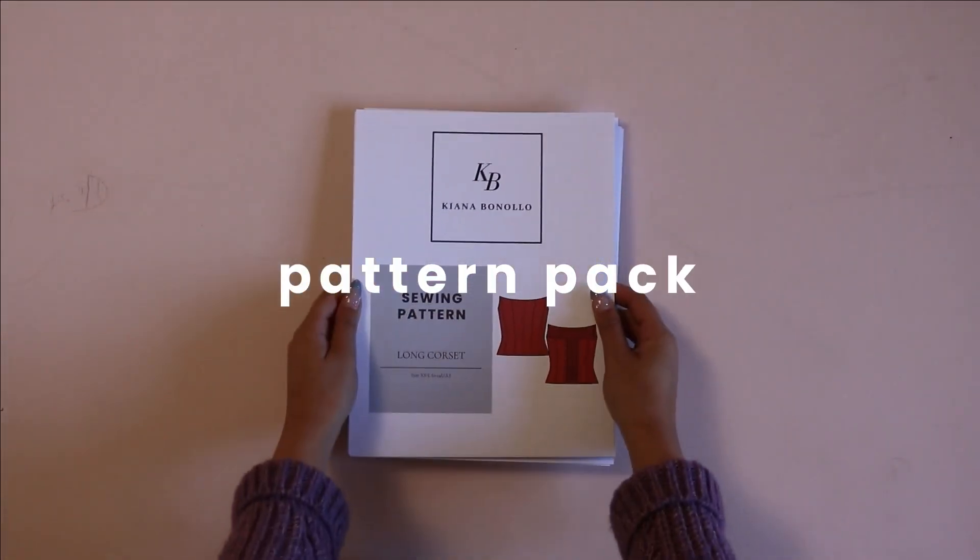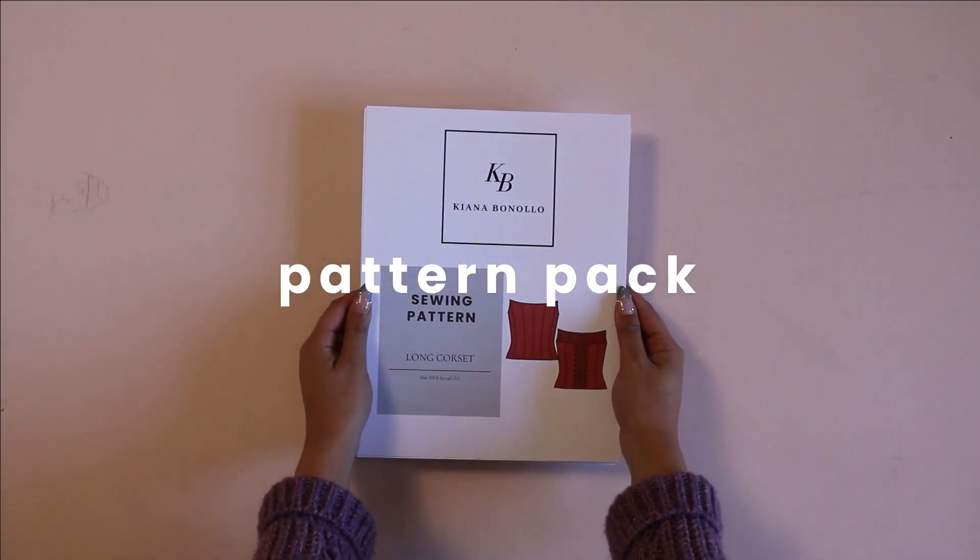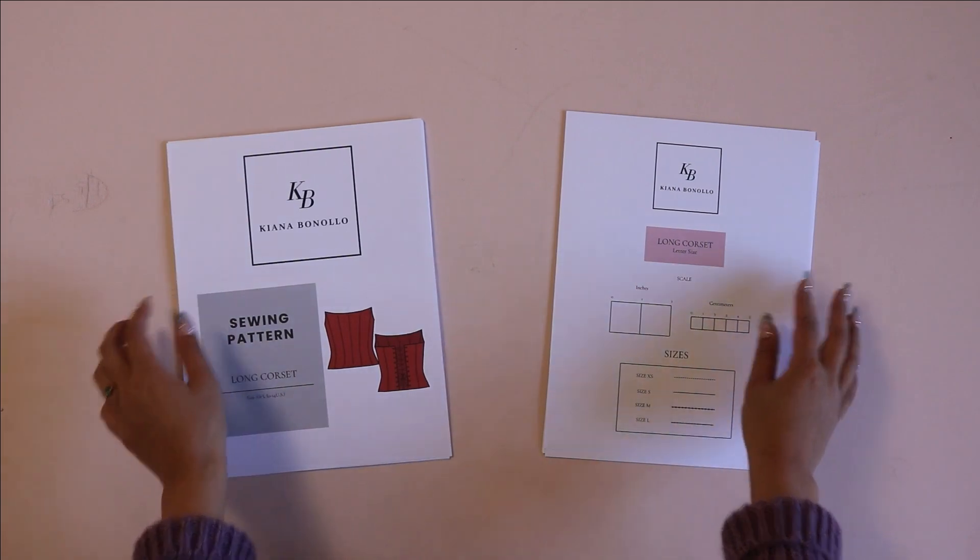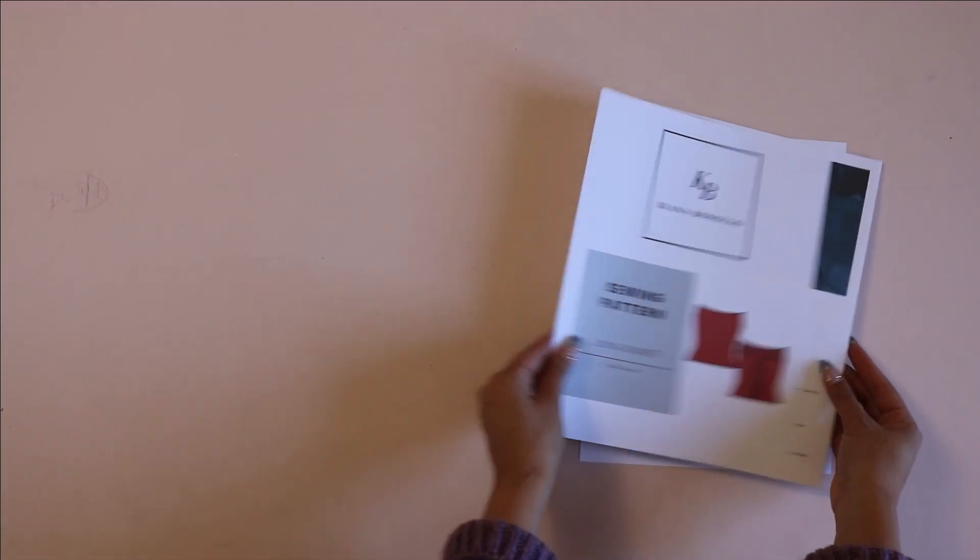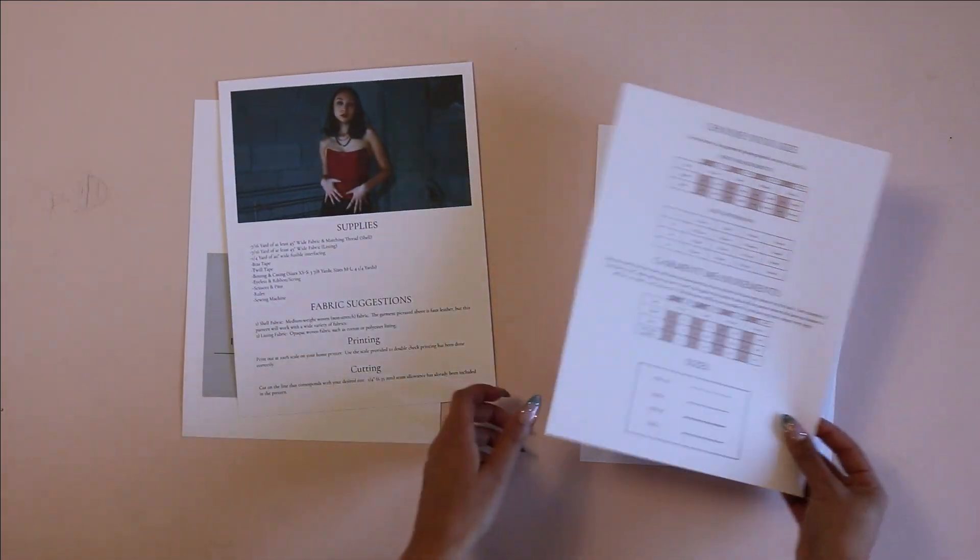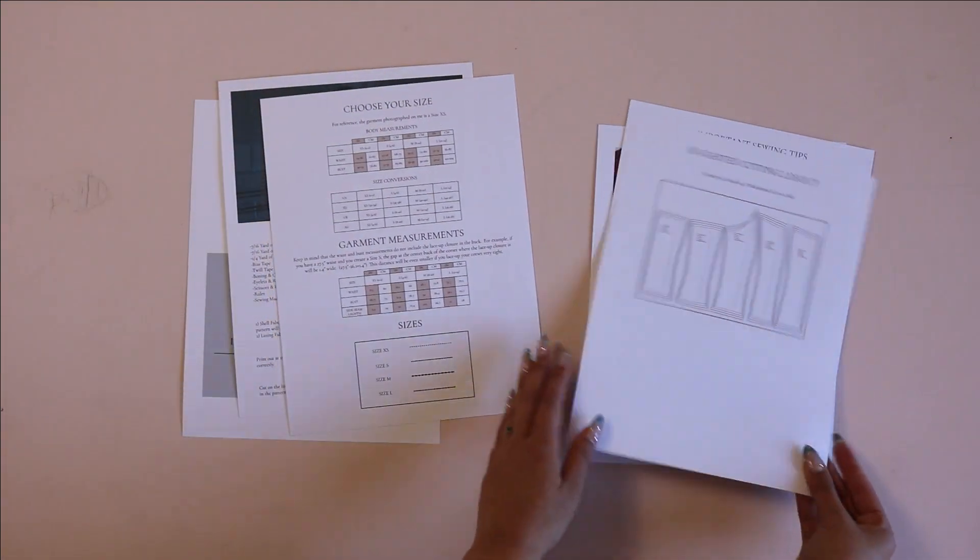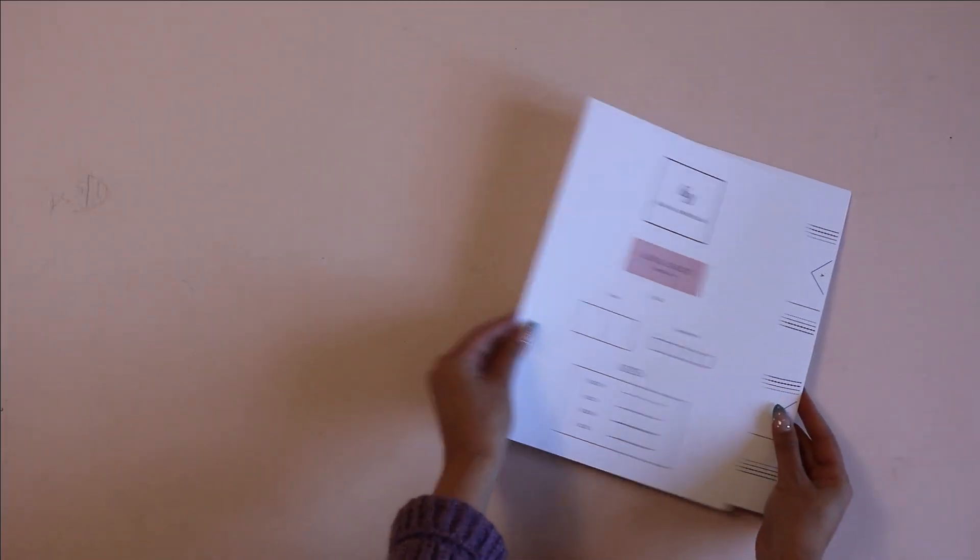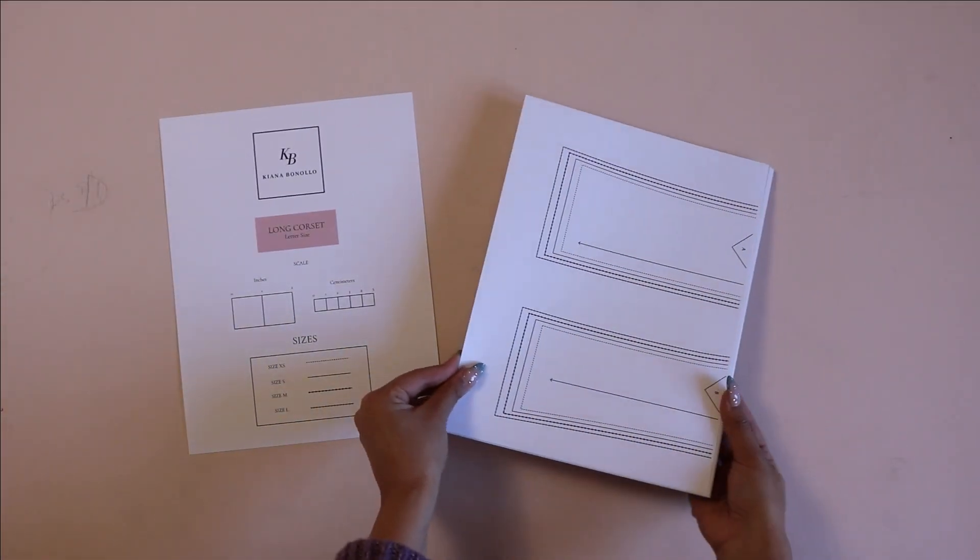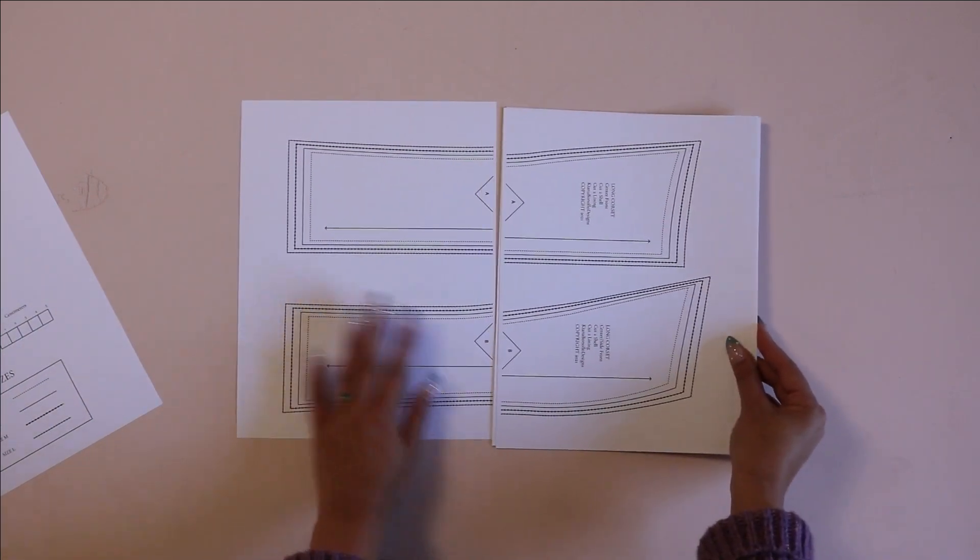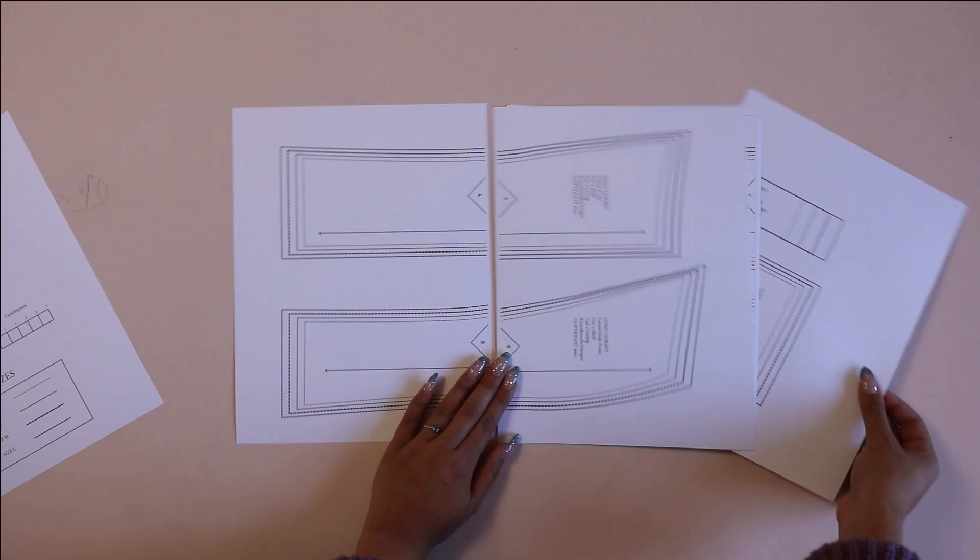Next, for the sewer or crafter in your life, you can make them a pattern pack. Start off by buying them a pattern. If you buy them a digital pattern, I would definitely print it out for them. For example, this is one of my digital patterns. I printed out the instruction manual and I also printed out the actual pattern file, just so they didn't have to do it—it just makes their life a little bit easier. If you get them a regular physical pattern, then you don't got to worry about this step.